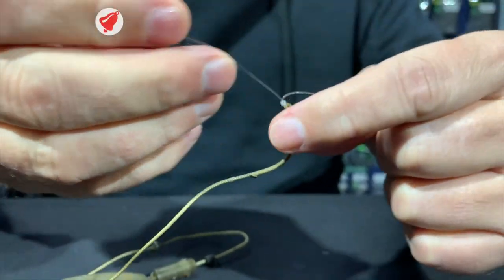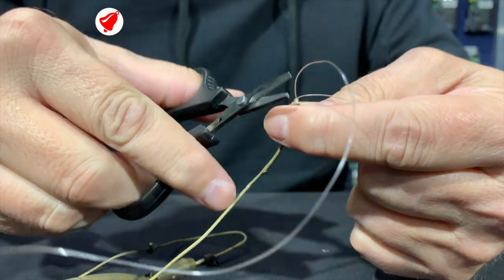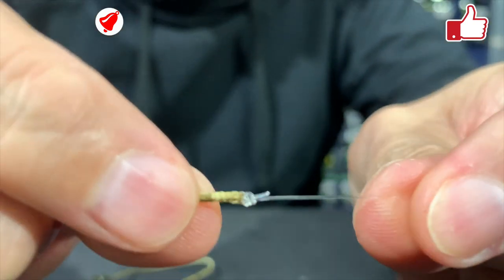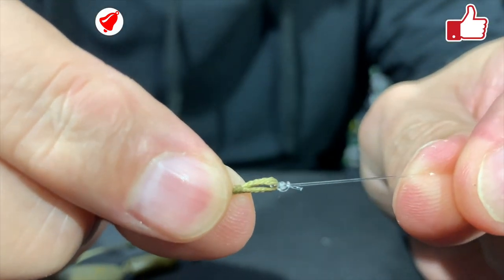Let me just cut off the tag end and then I can show you how the knot looks like. You don't need a very long tag end or a short one. There you've got a beautiful knot.